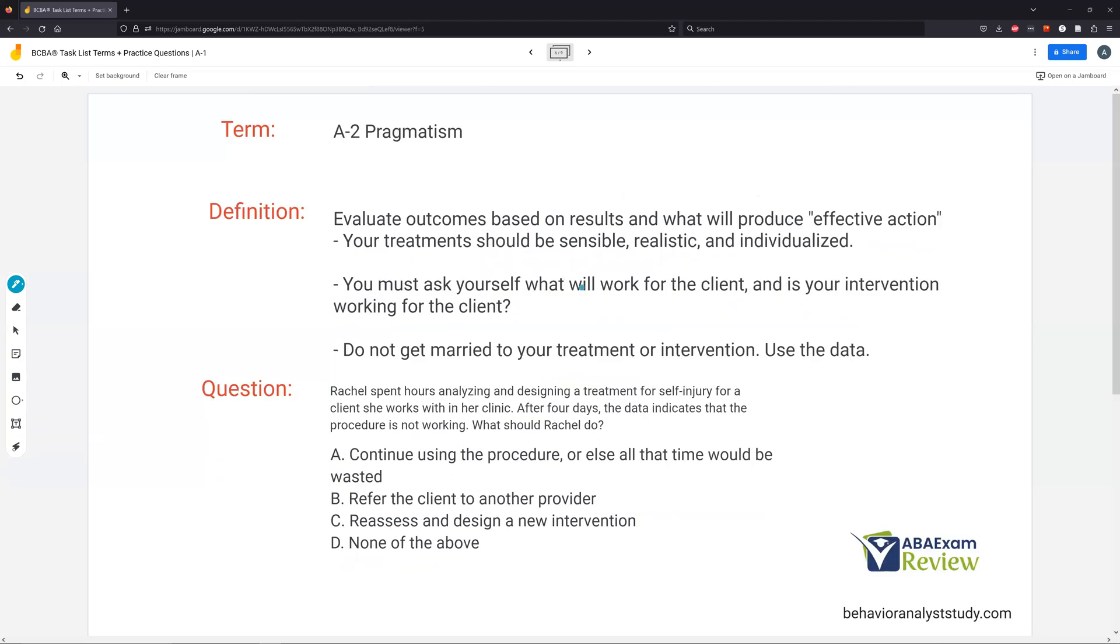Pragmatism. Evaluate outcomes based on results. What will produce effective action? We want to be pragmatic. You need to be sensible, realistic, and individualized. So what works? What doesn't? We don't get married to treatments. We don't get married to interventions, no matter how hard you worked on it, no matter how much you like it, and no matter how effective it's been in the past. Each client is different, and we never ever just use something because it's worked in the past or it's the easiest. You have to ask yourself, what's going to work for the client? You have to be pragmatic. Use the data. The data is going to guide you and help answer the question, is it working? Is it not? That's being pragmatic. You put aside emotions, feelings, and you ask yourself, is it working? Is it not? That is being pragmatic.